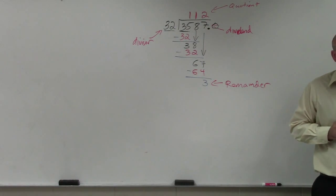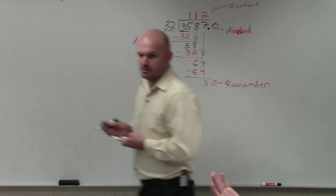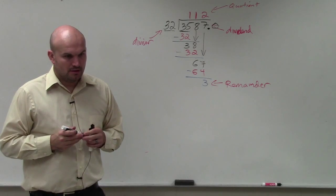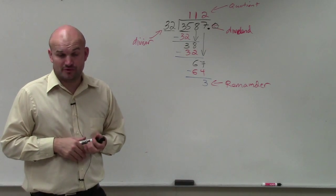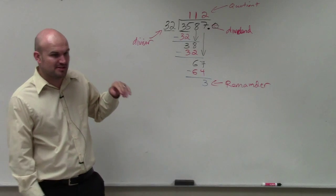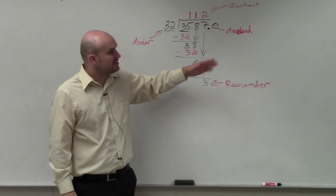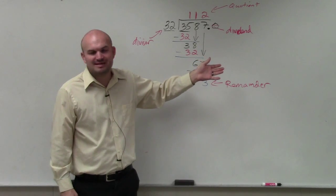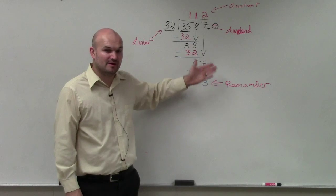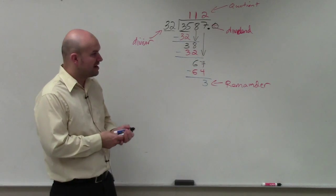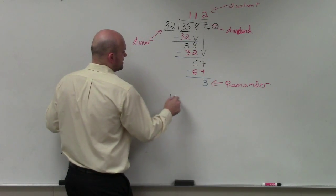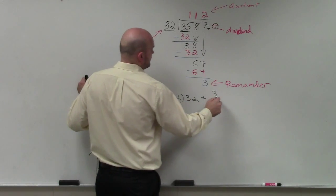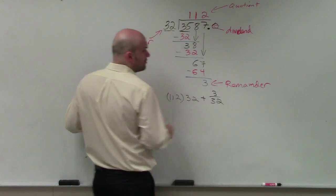Anybody have any questions on the algorithm for long division? I have to go through it every year because students forget it. Is there a way we're supposed to put it in the answer? Well, you're going to have different, it all depends on the question. Sometimes a question might say rewrite this as a product. If I was going to rewrite this problem as a product, what I would say would be 112 times 32 plus 3 over 32.